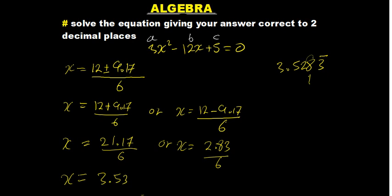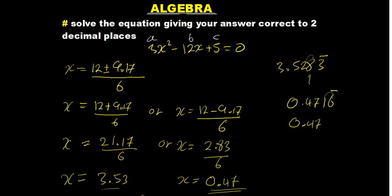For the other solution: 12 minus 9.17 gives 2.83, divided by 6, which gives 0.4716 recurring — the 6 is repeating. Rounding to two decimal places, the digit after the second decimal is 1, which can't round up the 7, so the answer is 0.47. And that's how we go about solving such a quadratic equation. Thank you very much for watching.